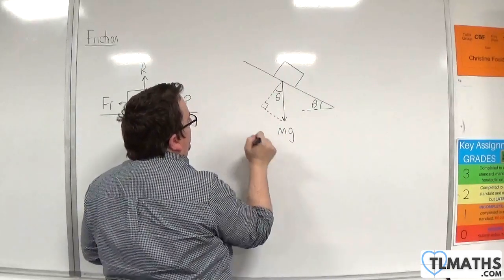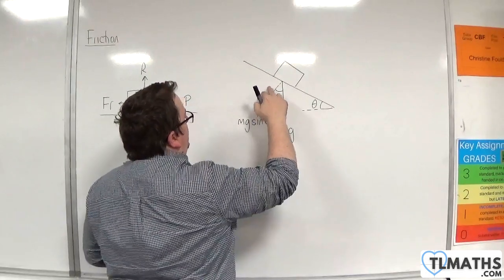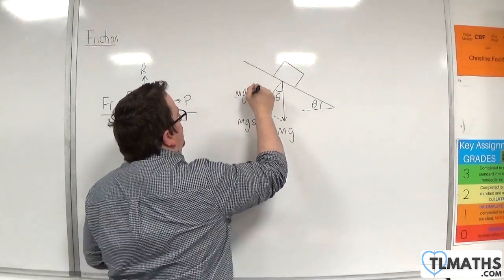This opposite side of the right-angled triangle is Mg sin theta, and the adjacent side is Mg cos theta.